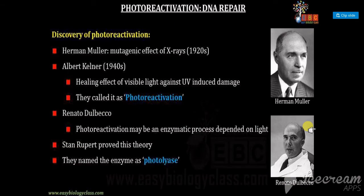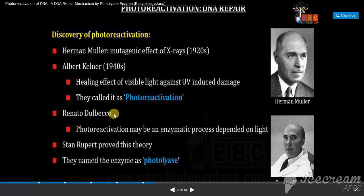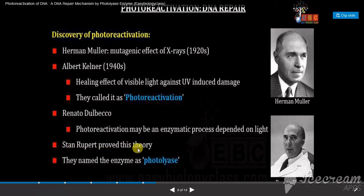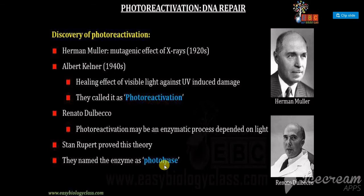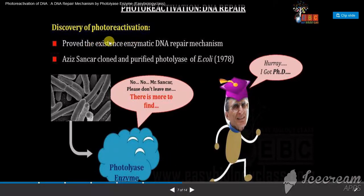Regarding the discovery of photo reactivation: Herman Muller discovered the mutagenic effect of X-rays in the 1920s. Then Albert Kelner in the 1940s discovered the healing effect of visible light against ultraviolet-induced damage and called it photo reactivation. Later, Renato Dulbecco discovered that photo reactivation may be an enzymatic process dependent on light. Stan Rupert then proved this theory and named the enzyme photolyase. These events led to proving the existence of enzymatic DNA repair mechanisms.